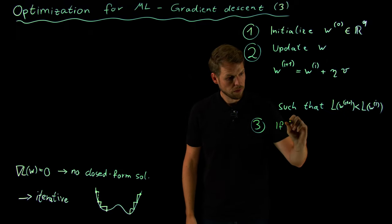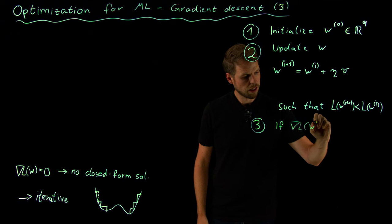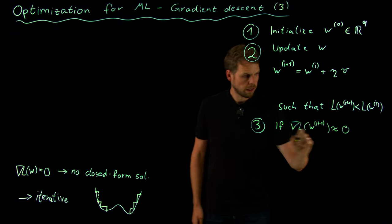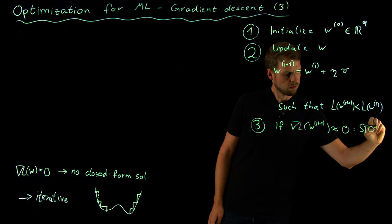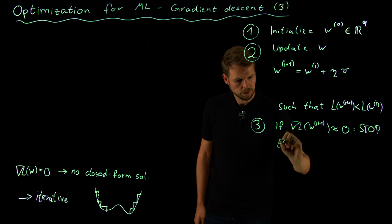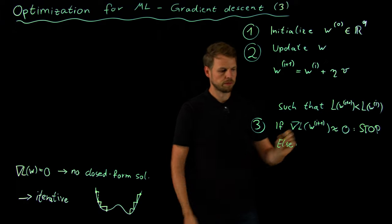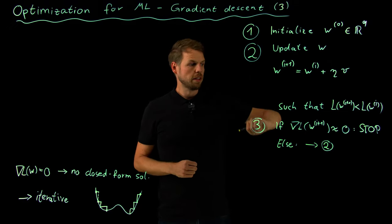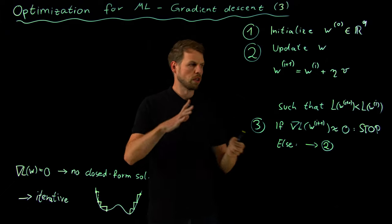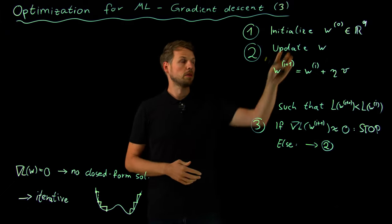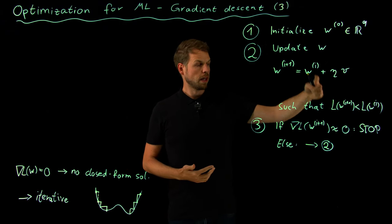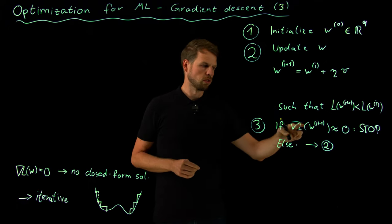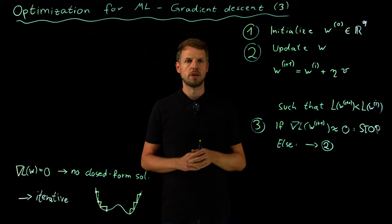If the gradient of the loss function at iterate i+1 is approximately zero, we stop. If not, we go back to step two and repeat. We start with some initial guess, apply the iterative update rule, and after sufficiently many iterations, the stopping criterion is satisfied and we are done.